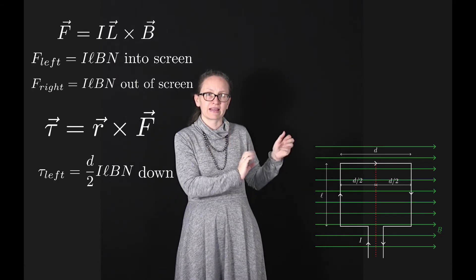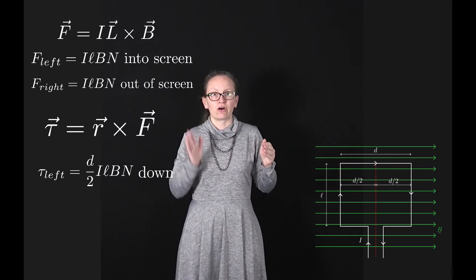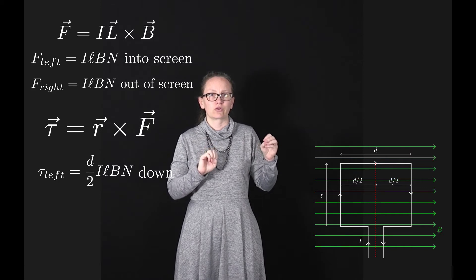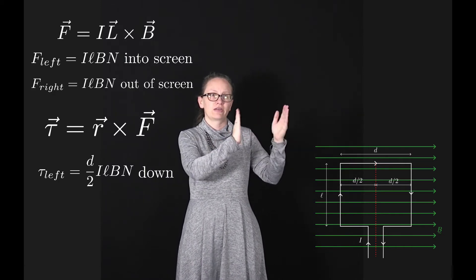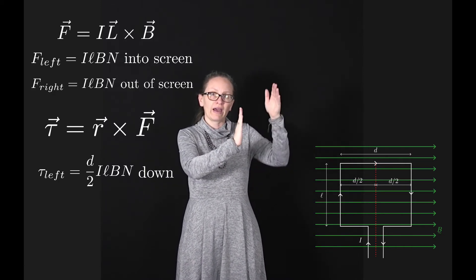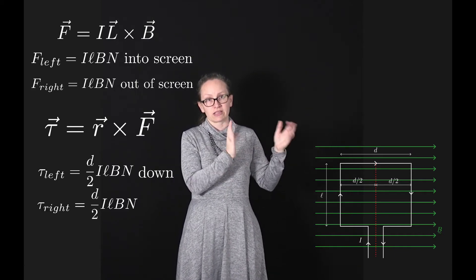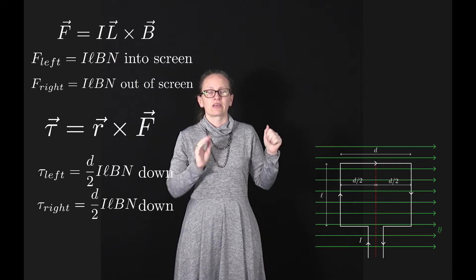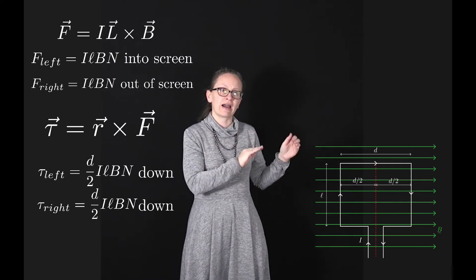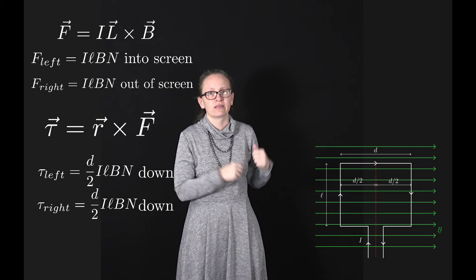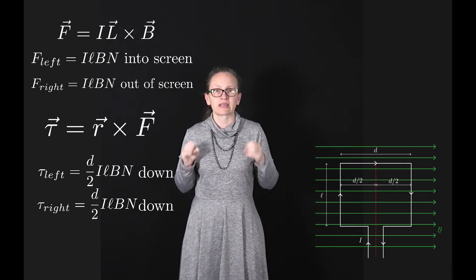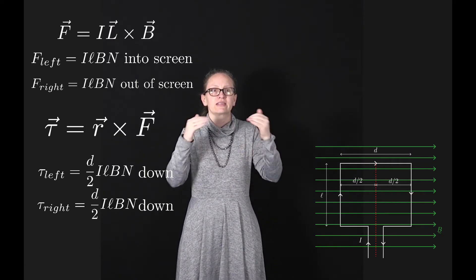For the right-hand side, the torque also equals D over 2 times I L B N. In this case, the R vector is to the right and the force is out of the screen, which with our right-hand rule also gives a torque down.